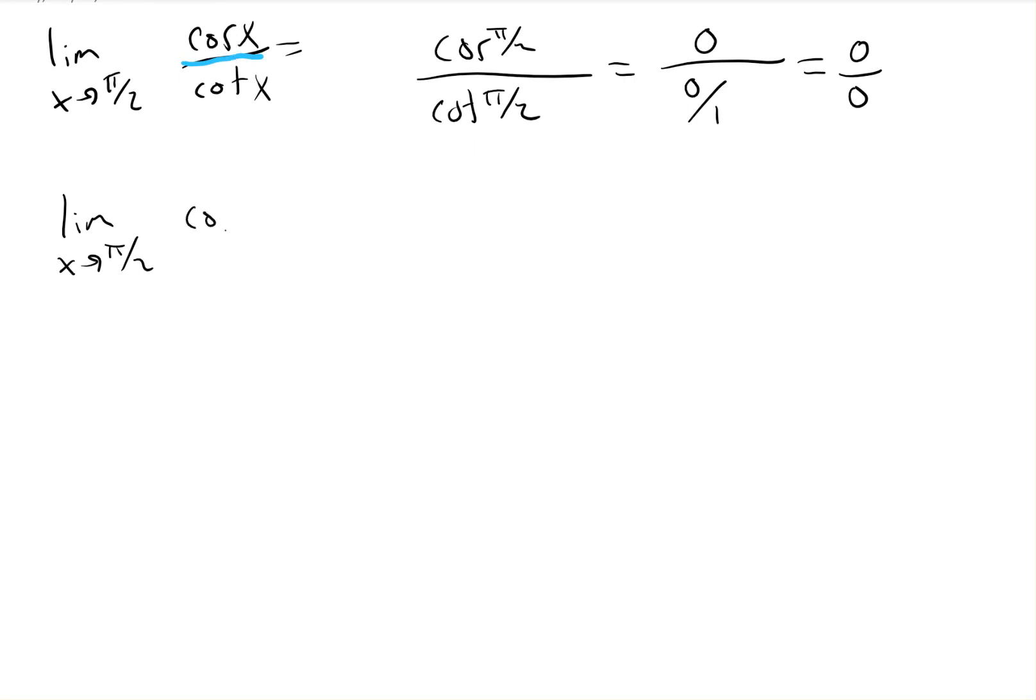First of all, I'm going to help you see this a little bit. This is cosine x divided by cotangent x. When we divide fractions, we often change it to multiplying by the reciprocal. So if you do that, you can get it to look like this.